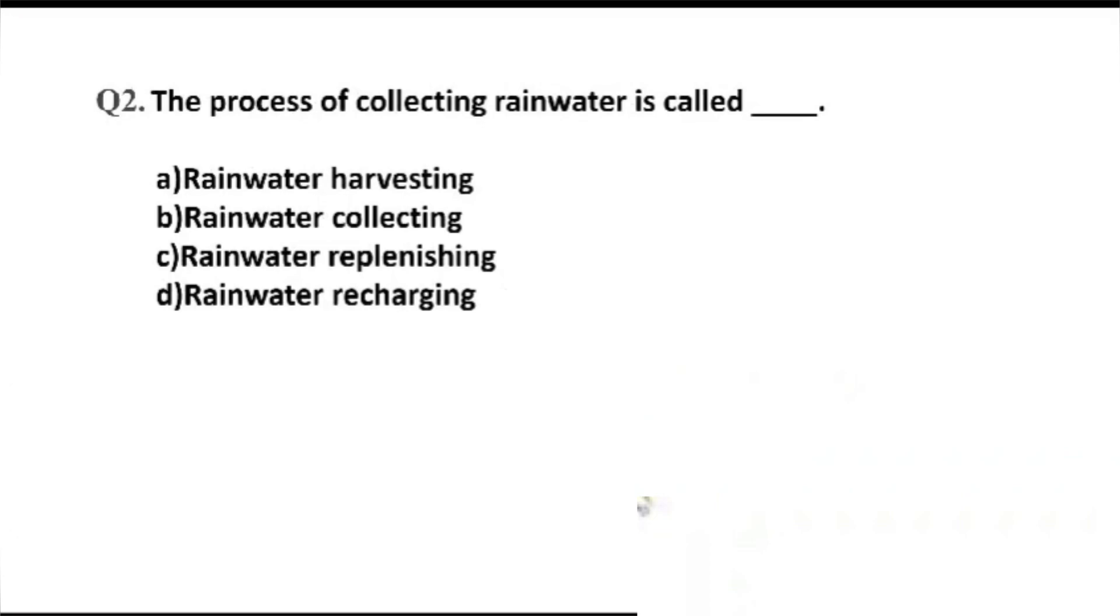Question number 2. The process of collecting rainwater is called dash. Option A, rainwater harvesting. B, rainwater collecting. C, rainwater replenishing. D, rainwater recharging. The right answer, Option A, rainwater harvesting.